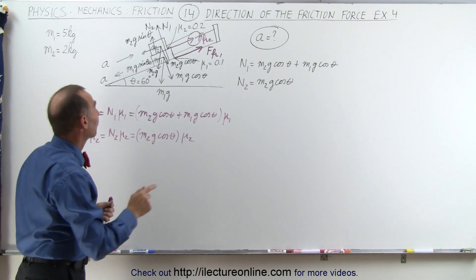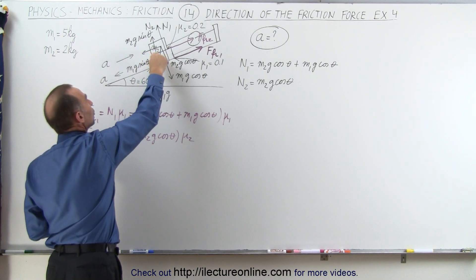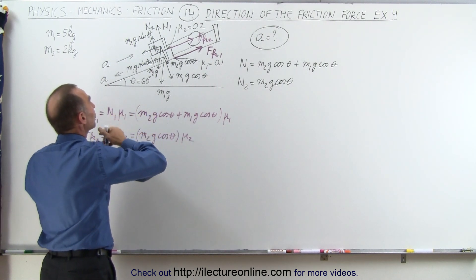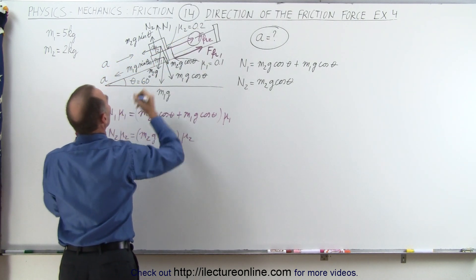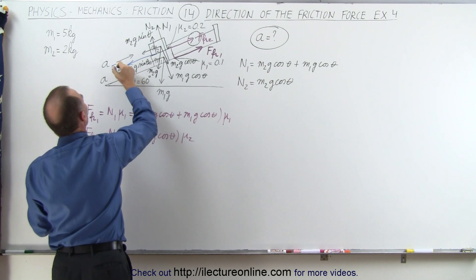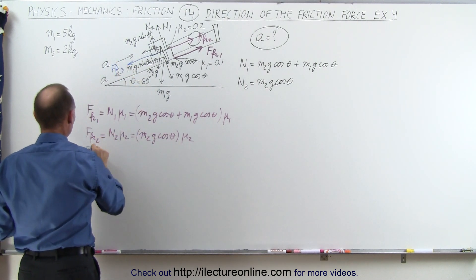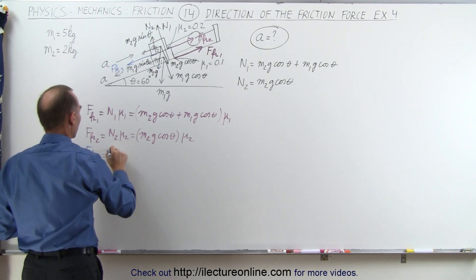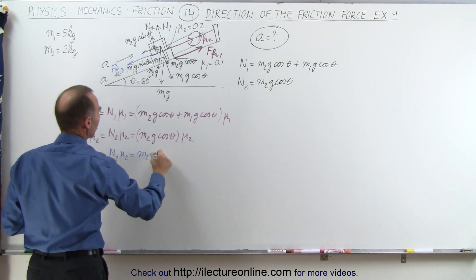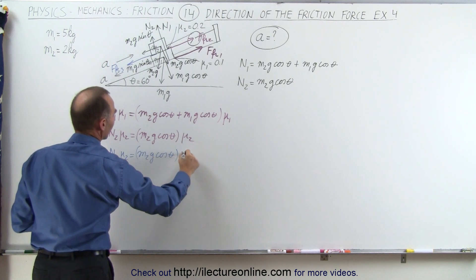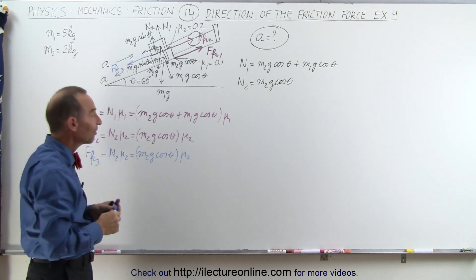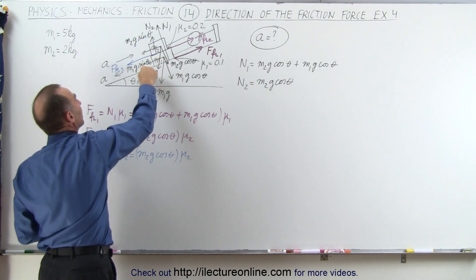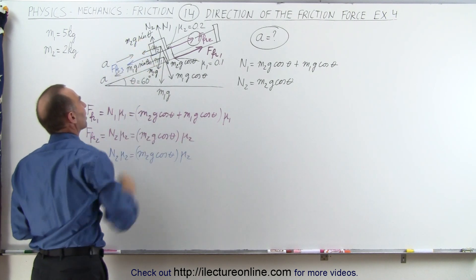Now there's one more friction force — the friction force on m2 caused by the two surfaces sliding over one another, but in that case the friction force will be in the opposite direction. Notice m2 will accelerate up the block, therefore we're going to have an opposing friction force this way, force friction three. Force friction three will have the same magnitude but opposite direction to force friction two, which is N2 times mu2, equal to m2g cosine of theta multiplied times mu2.